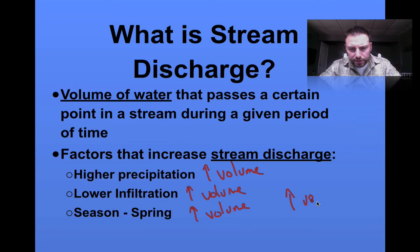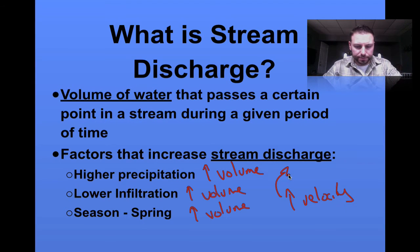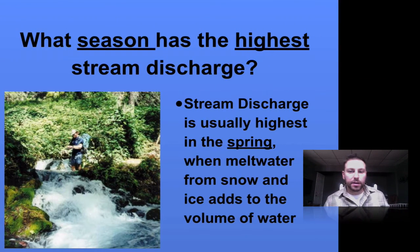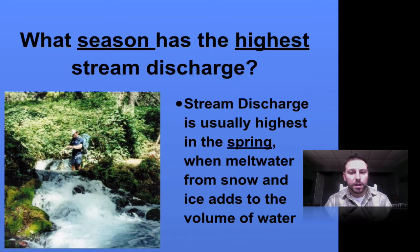If we increase the velocity of the stream, that'll also increase your stream discharge. So just a number of things, basically looking at how that water is flowing and moving. In spring, we would see more meltwater coming down from mountaintops and collecting into our streams. We would also see possible seasonal rains at that time, so that would increase our stream discharge.